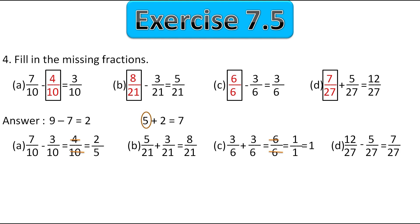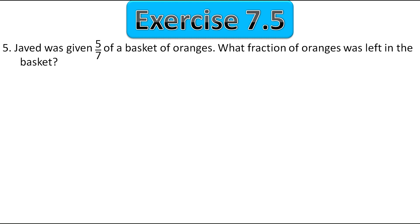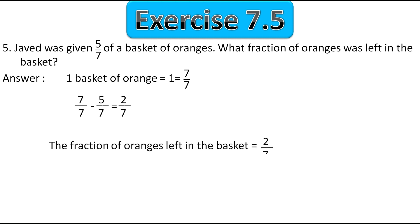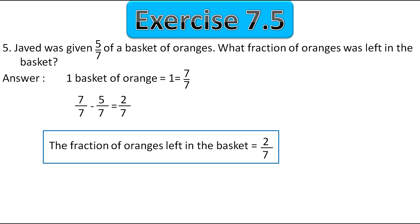Now the fifth question: Javed was given 5 upon 7 of a basket of oranges — out of one basket he was given 5 upon 7. What fraction of oranges was left in the basket? We subtract 5 upon 7 from 1. We write 1 as 7 upon 7, and subtract 5 upon 7 from 7 upon 7 to get 2 upon 7. The fraction of oranges left in the basket is 2 upon 7. Exercise 7.5 ends here. If you like my teaching please subscribe to my channel. Bye everyone!